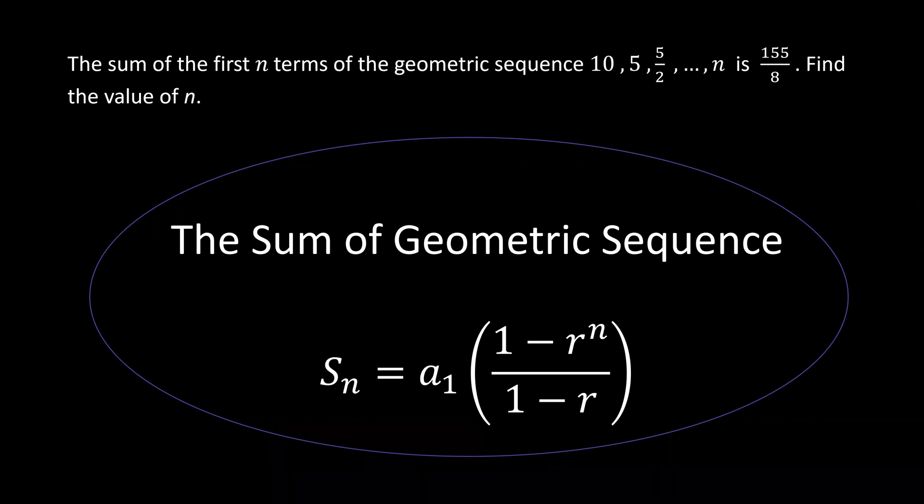Hello everyone. In this problem, the sum of the first n terms of the geometric sequence 10, 5, 5/2, ... is given to be 155 over 8, and we are to find the value of n.